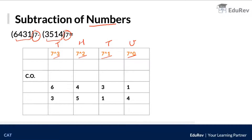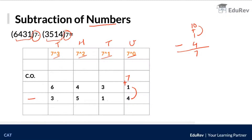Since the base is seven, we take powers of seven. Now let's subtract: 6431 minus 3514. We start from the right-hand side — one minus four. In the decimal system we would add 10 to get 11, then subtract 4 to get 7. But here, because the base is seven, we add 7 to 1, giving us 8. Eight minus four equals 4.